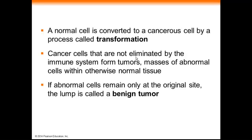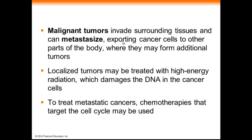Typically the immune system will get rid of cancer cells, but those that are not eliminated will form tumors, and there are a couple types. If the abnormal cells stay at the original tumor site, those are called benign — they do not spread and typically don't cause serious cancer. Malignant tumors, on the other hand, can invade surrounding tissues and spread through a process called metastasis, which means the cancer is spreading to other parts of the body — a more serious form because it can reach places doctors may not detect.